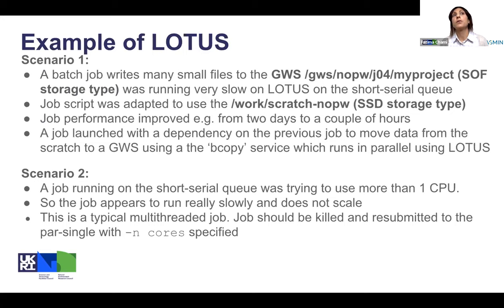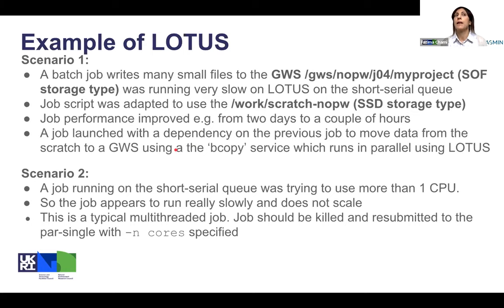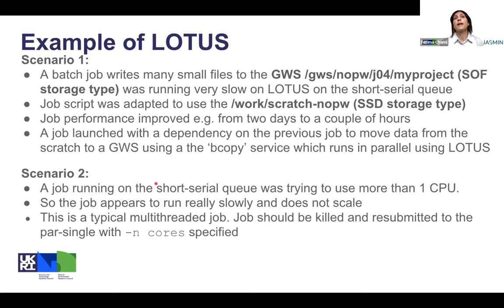An example scenario: a job running by writing small files to the group workspace was running very slowly. Adapting the job script to use the SSD storage optimized for small files improved the running time from two days to a couple of hours. Then a subsequent job handles cleanup using job dependencies, and a bbcp service job moves the data. This is a typical workflow when using work scratch. Another scenario: a job on the short serial queue was trying to use more than one CPU, causing it to run slowly — a symptom of spawning threads. That job should be killed and resubmitted to par-single with the correct number of cores specified.